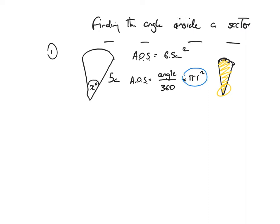Now I'm going to develop a formula for the angle. I bring pi r squared down and divide, so it becomes: the area of the sector divided by pi r squared is equal to the angle over 360. That's a formula you want to remember — copy that one down. Area of the sector over pi r squared equals angle over 360.